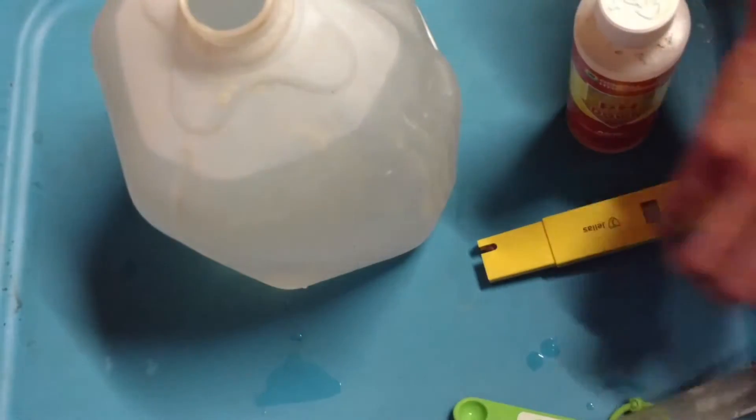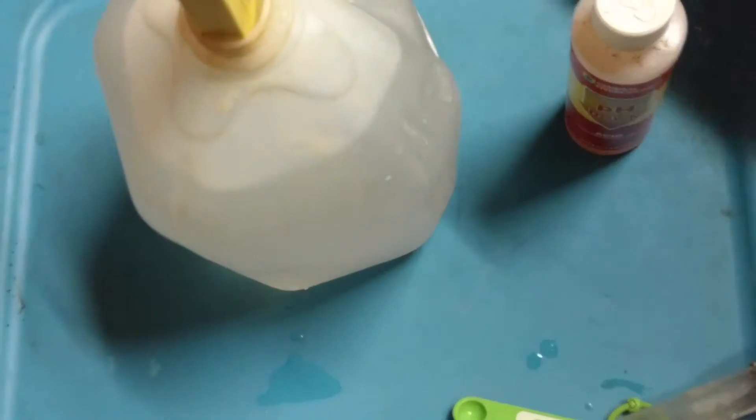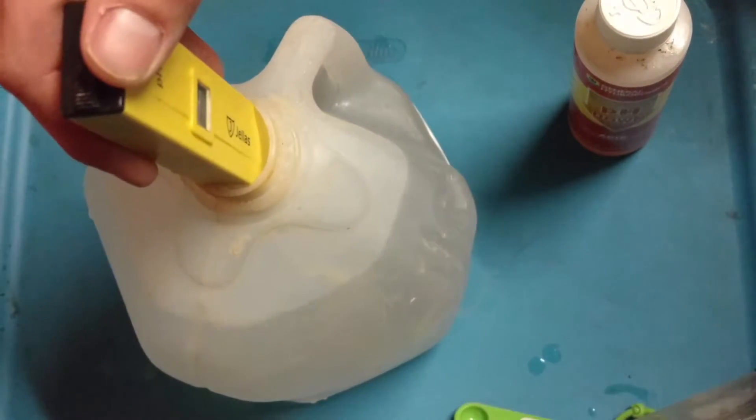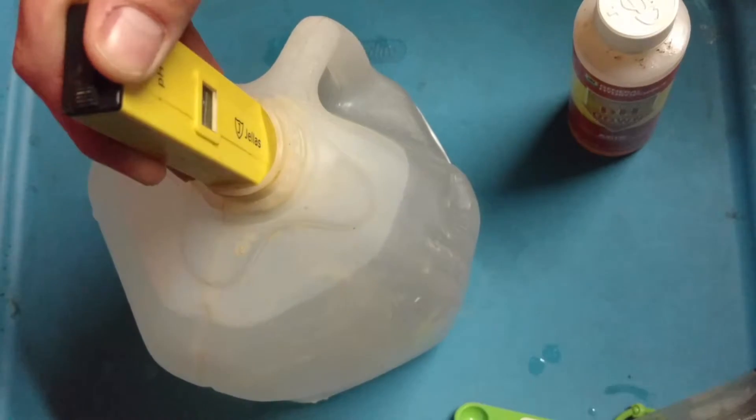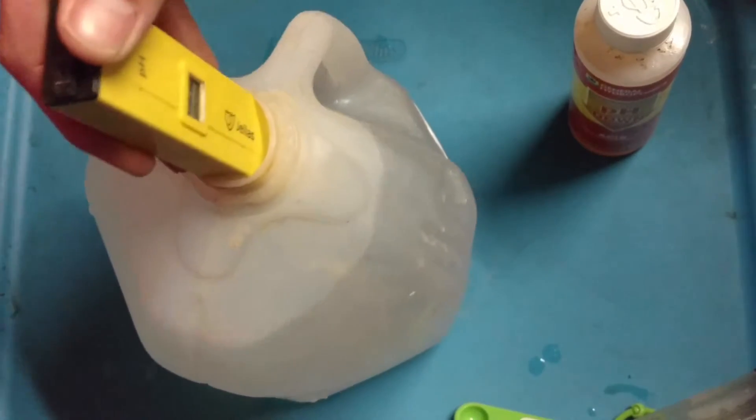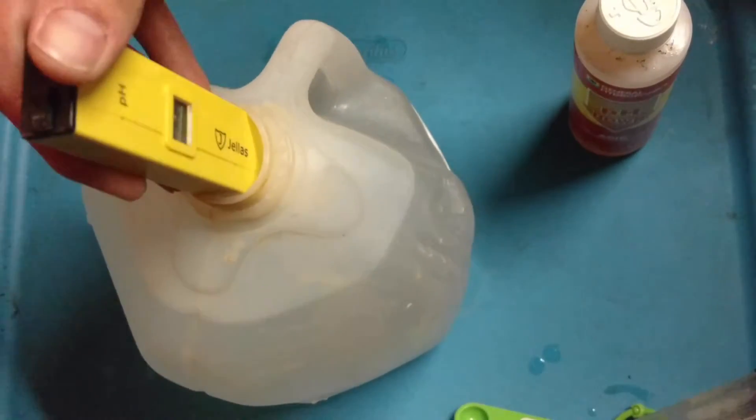Then, we're gonna take our handy pH meter, and she fits right in there so we don't even have to hold her hands free. Now, this is just straight tap water right out of my kitchen sink. Give her a minute, swirl her around.